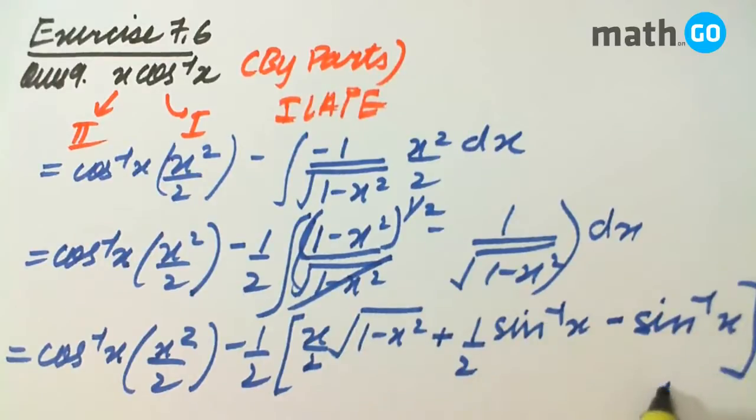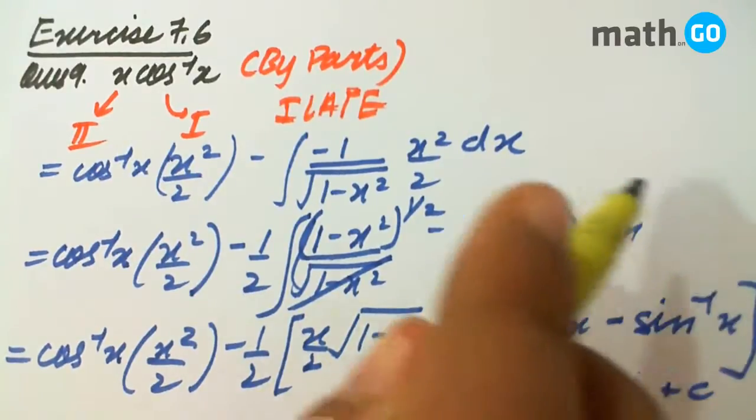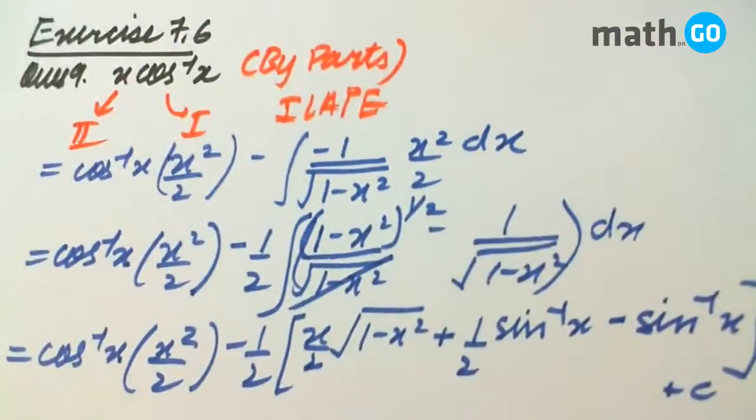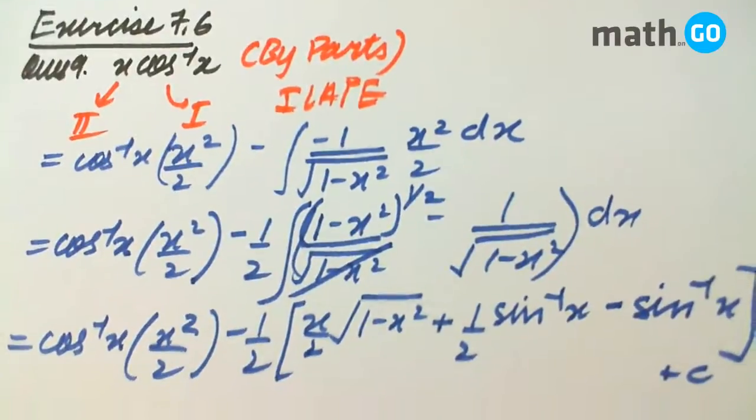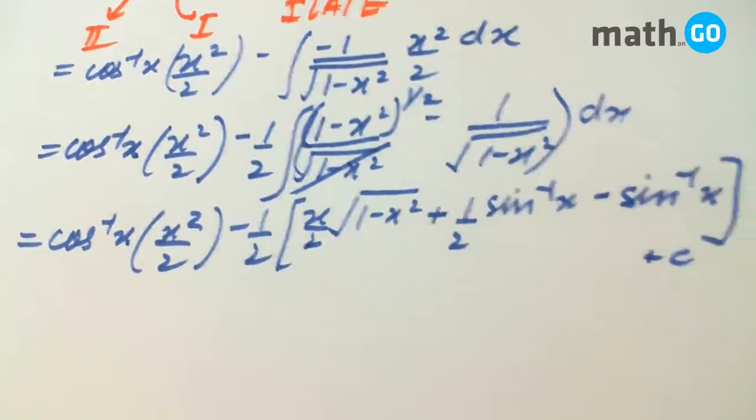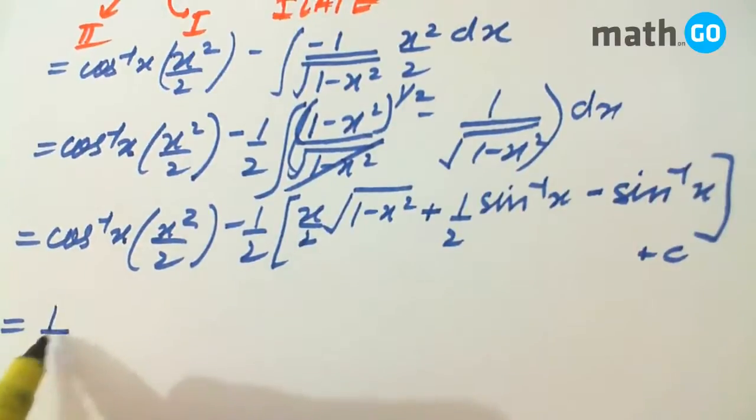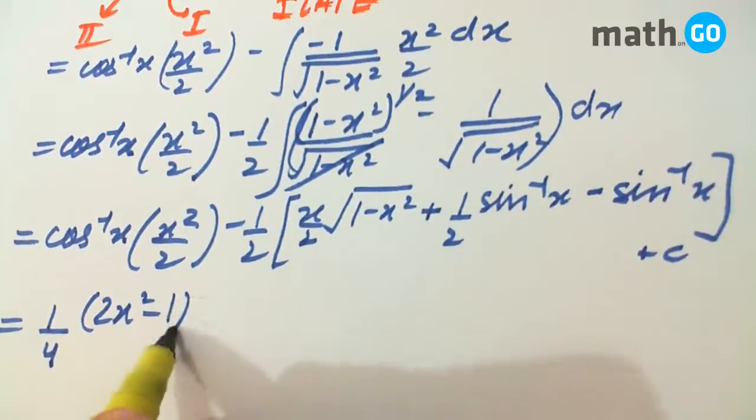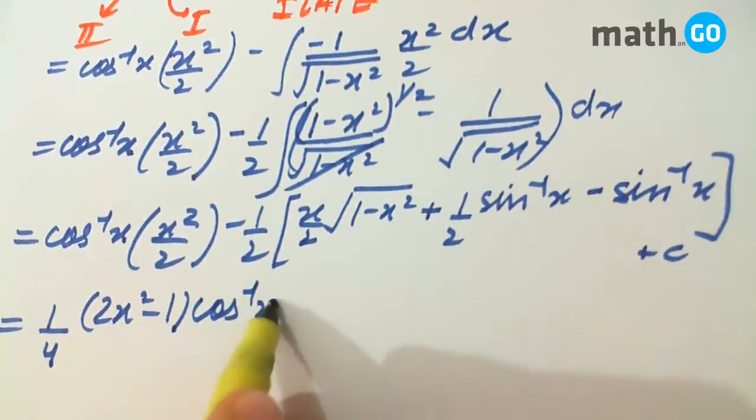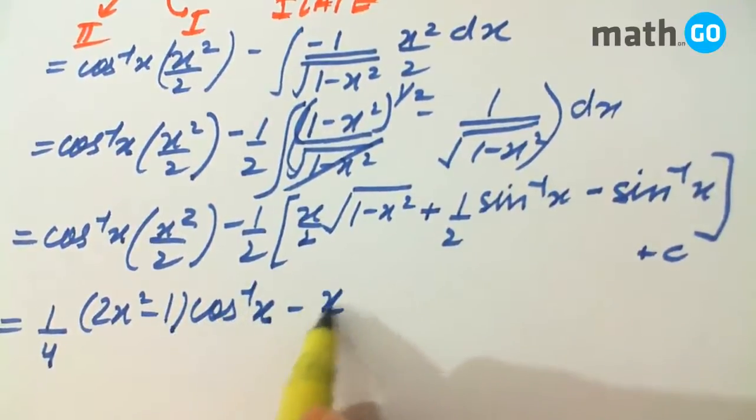Obviously, plus the constant. So, this can be further solved. To give a very simple expression as 1 by 4 into 2x square minus 1 cos inverse x minus x by 4 into root of 1 minus x square plus c.